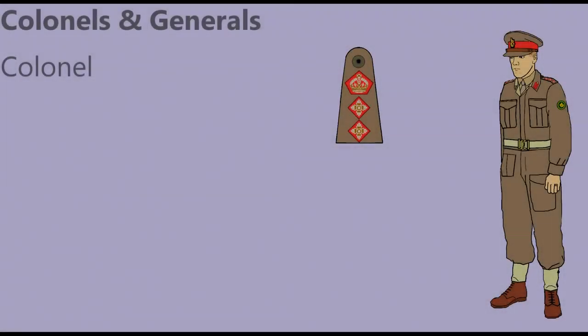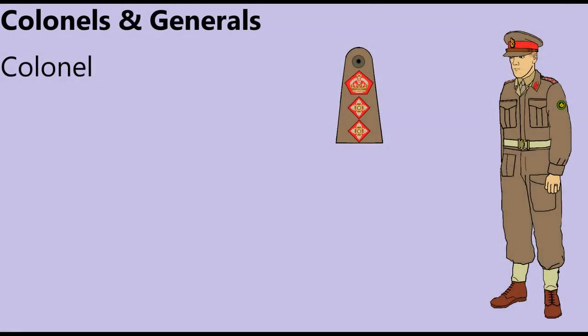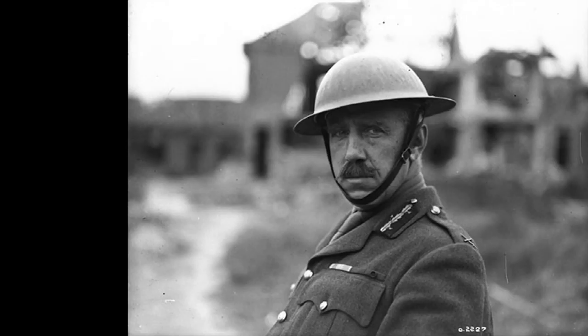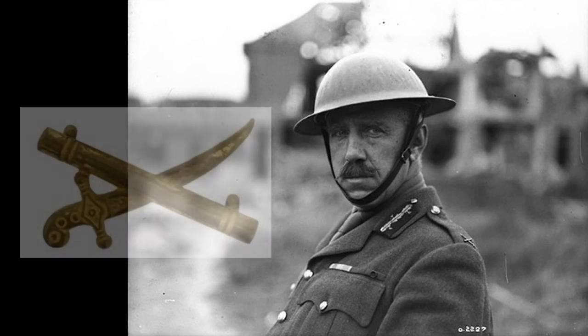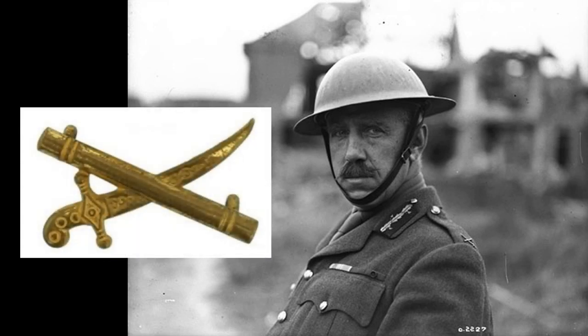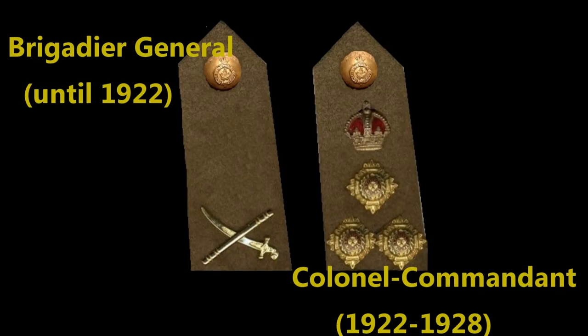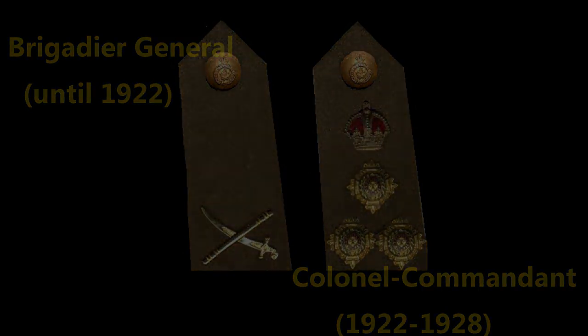The rank of Colonel was not associated with any command role and was bestowed to senior officers serving in a staff, administrative, or honorary position. In the First World War, officers holding the rank of Brigadier General wore the crossed saber and baton insignia of general officers. The rank was replaced by Colonel Commandant shortly after the war, which was used until 1928 when the rank of Brigadier was established.